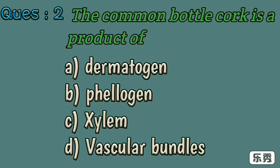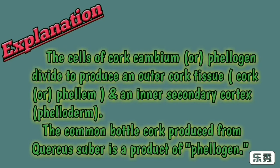Second one. The common bottle cork is a product of: A) dermatogen, B) phellogen, C) xylem, D) vascular cambium. Here B, phellogen, is the right answer. The cells of cork cambium or phellogen divide to produce an outer cork tissue, also called cork or phellem, and an inner secondary cortex, also called phelloderm. So the common bottle cork produced from Quercus suber is a product of phellogen.